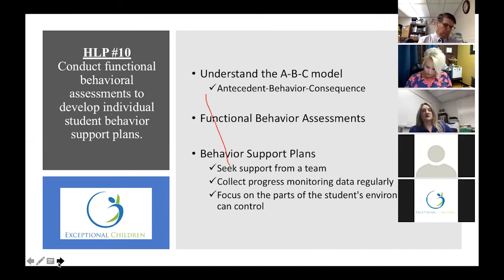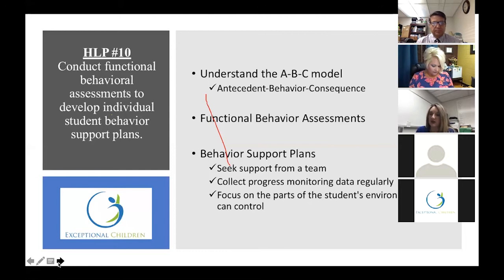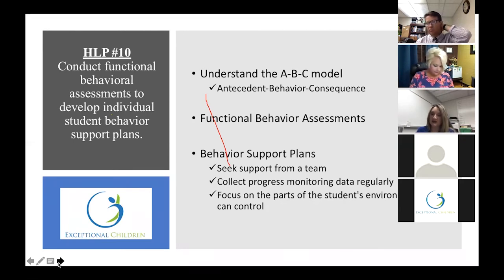The next one is high leverage practice number 10, around those three components — really understanding the ABC model for behavior: antecedent, behavior, and consequence. We develop understanding of the function of a behavior. For example, sometimes a student may have a behavior as an avoidance strategy — the antecedent is a task they cannot complete, so they have a disruptive behavior and get removed from the classroom. Helping teachers understand that cycle and that ABC model helps special educators look at the function of the behavior and then develop those behavior support plans.